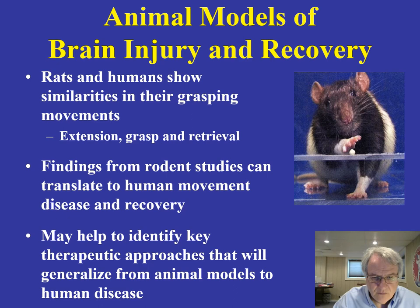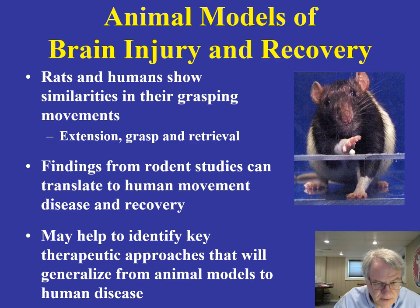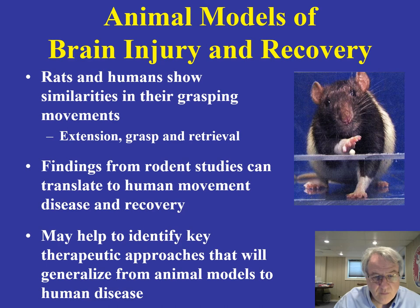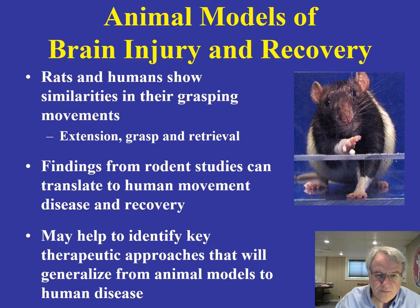There's a lot of interesting work done in rodents exploring what happens as a consequence of certain types of brain injury and what happens to those grasping responses. It may help us to identify various therapeutic approaches that may be helpful for human beings suffering from brain damage. That work is ongoing and very important in terms of understanding brain damage and developing therapeutic approaches to helping individuals with brain injury.